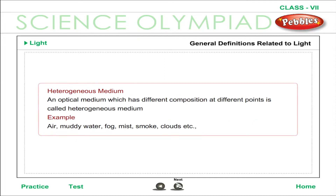Heterogeneous medium: an optical medium which has different compositions at different points is called a heterogeneous medium. Examples include air, muddy water, fog, mist, smoke, and clouds.